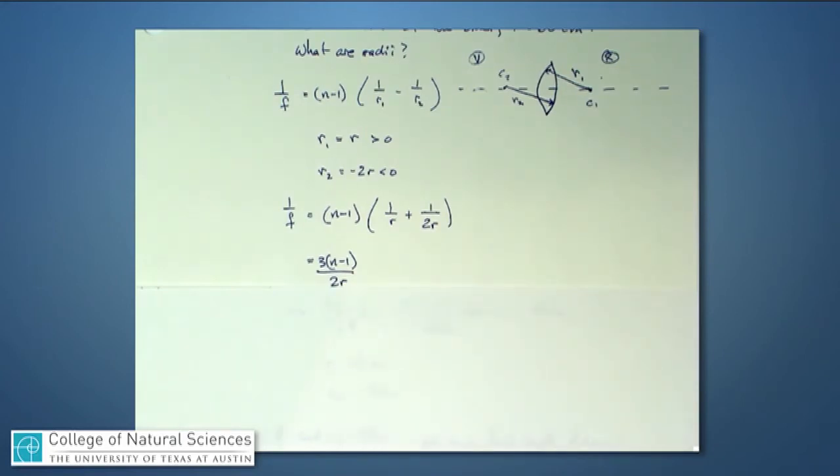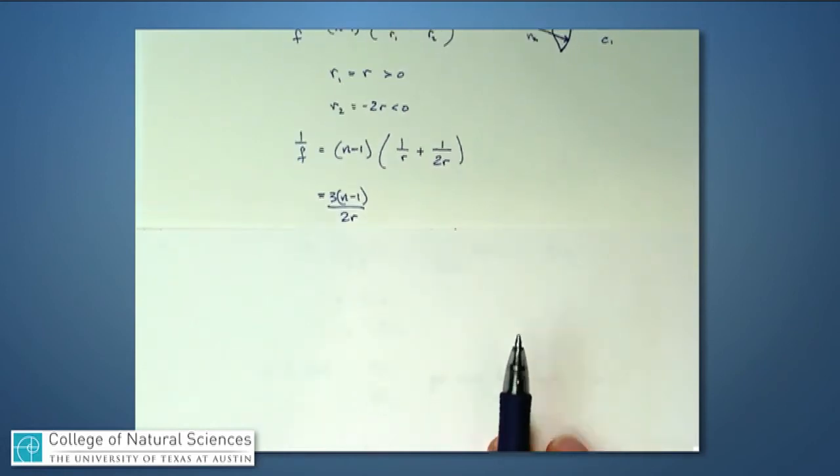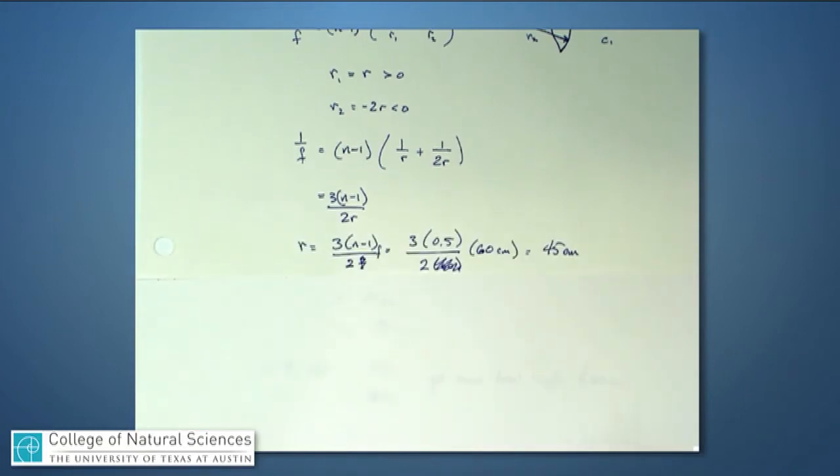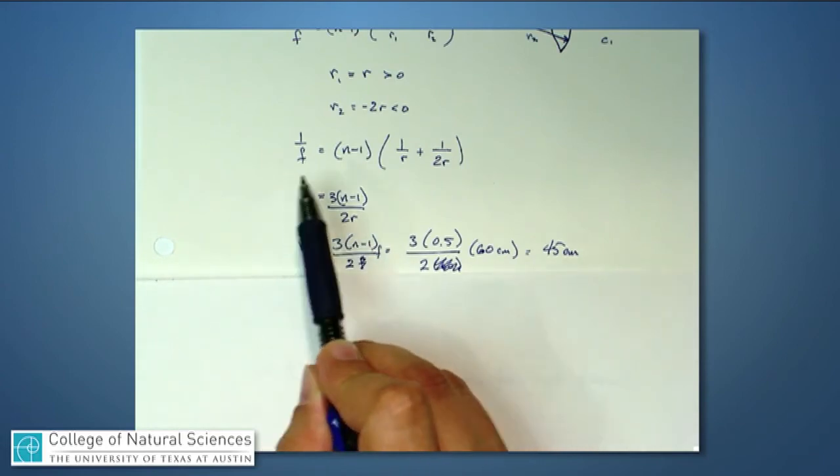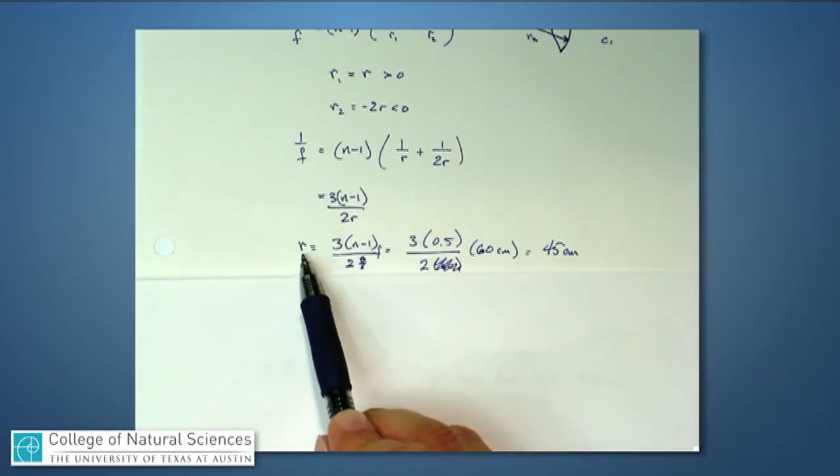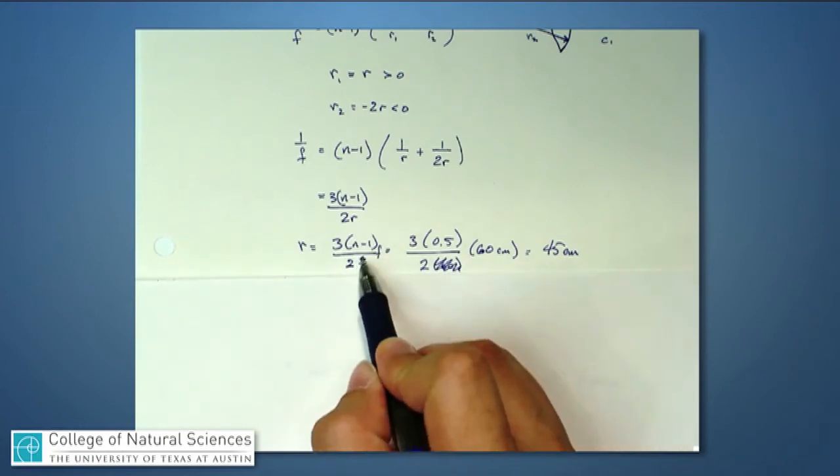Now what's known and what's not known in this problem? I don't know r. I would like to know that. I do know the focal length, it's 60 centimeters, and I know the index of refraction, it's one and a half. So what I have is when I move r over to the left-hand side and focal length over to the right-hand side, I have r is three n minus one times f over two.